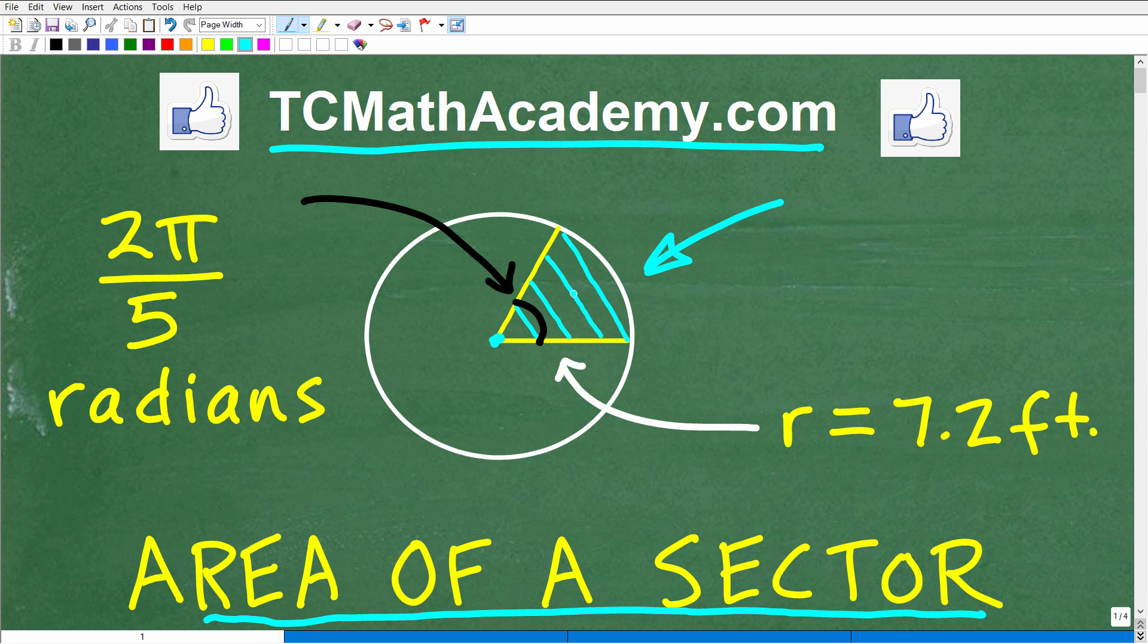And the specific details of this problem is the following. The central angle, which is this angle right here, this is the center of the circle. The central angle is 2π over 5 radians, and the radius is 7.2 feet. So that is enough information to be able to calculate the area of this particular sector.